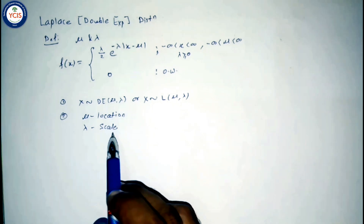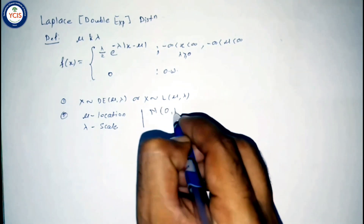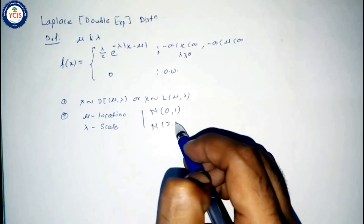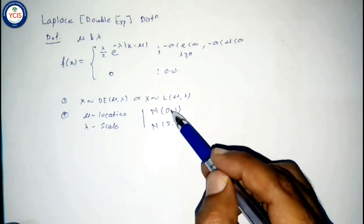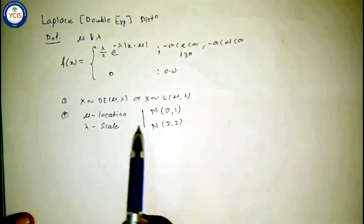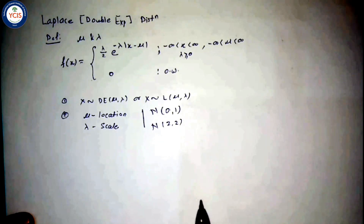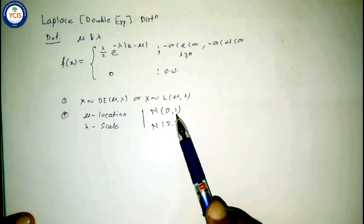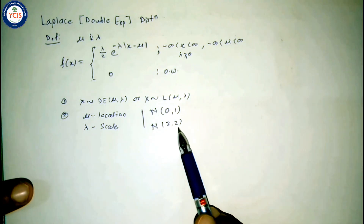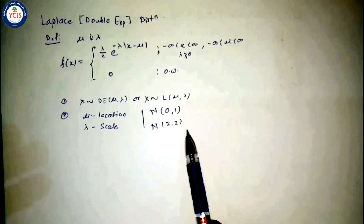The location parameter determines the location or shift of the distribution, and the scale parameter determines the spread — a larger value of the scale parameter means a more spread out distribution. For example, compare Normal(0,1), the standard normal distribution, with Normal(2,2). In Normal(0,1) the peaked point is at mu=0; in Normal(2,2) the peak shifts to mu=2. Also, variance=1 gives a narrower spread compared to variance=2. So location affects shift and scale affects spread.